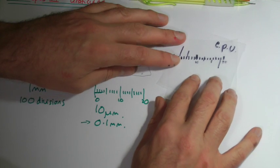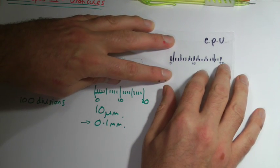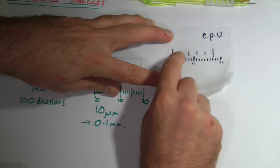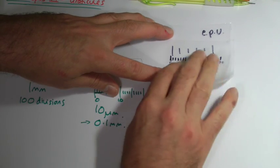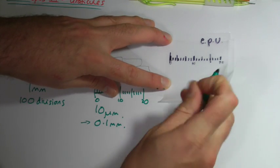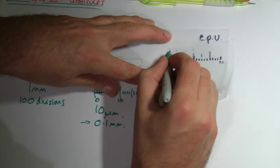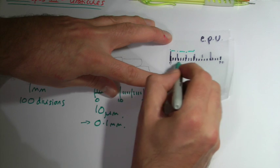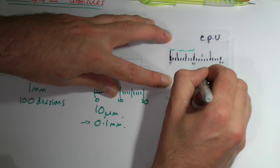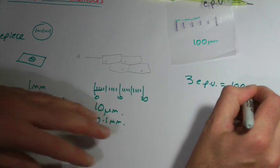The trick is to try and line these up so that they're in the same direction. What I want to work out is how big each of these eyepiece units are — if I know how big one of these is, I can work everything else out. So I'd line it up, and I'm going to say that three of my eyepiece units are the same as ten of those small stage graticule units. Remember, each of those ten small units is ten micrometres, so that's a hundred micrometres. So three eyepiece units are a hundred microns big.